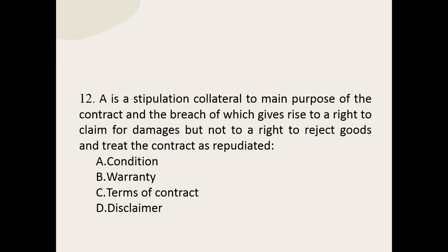Q12: A blank is a stipulation collateral to the main purpose of the contract, the breach of which gives rise to a right to claim for damages, but not to a right to reject goods and treat the contract as repudiated. The options are: condition, warranty, terms of contract, and disclaimer. The correct option is warranty.